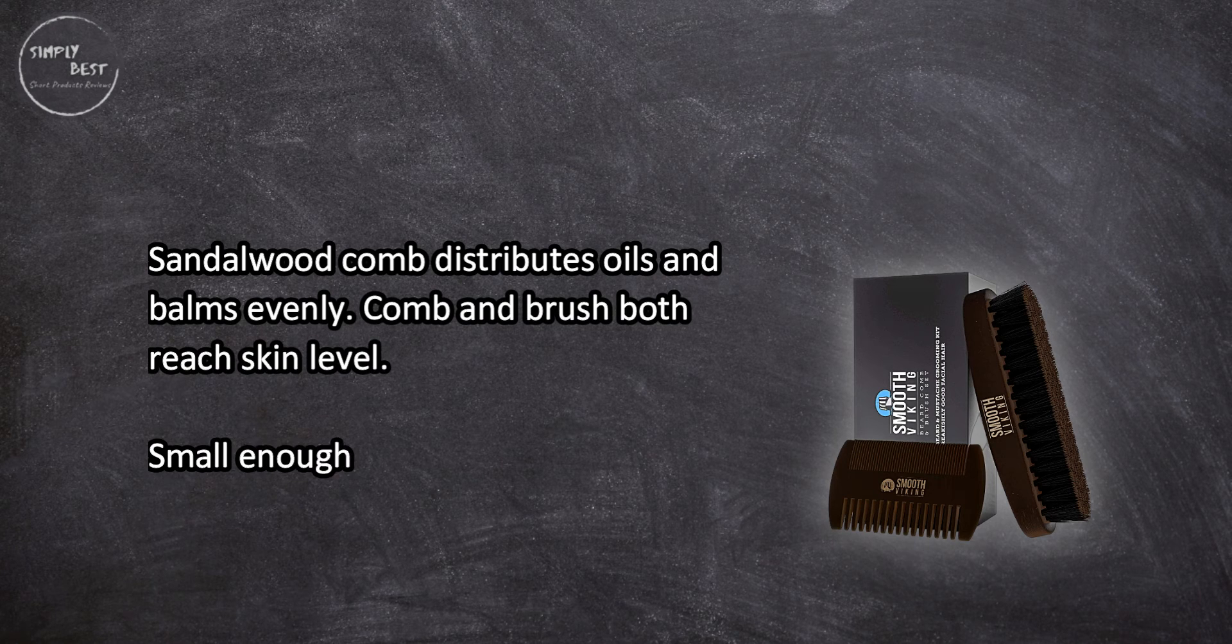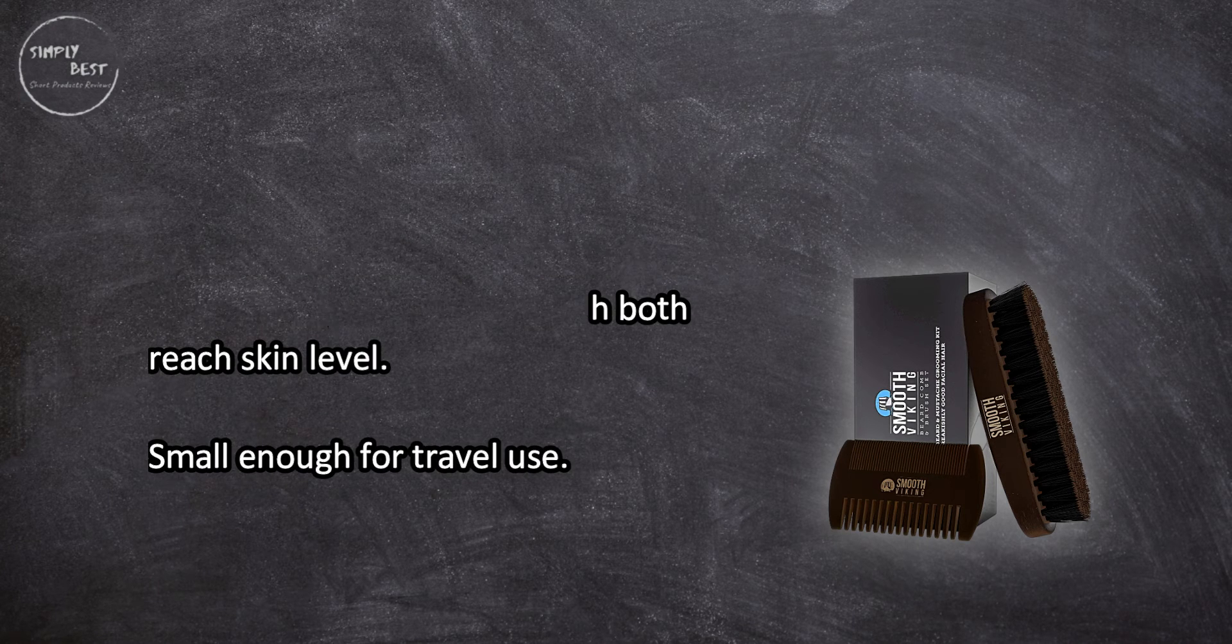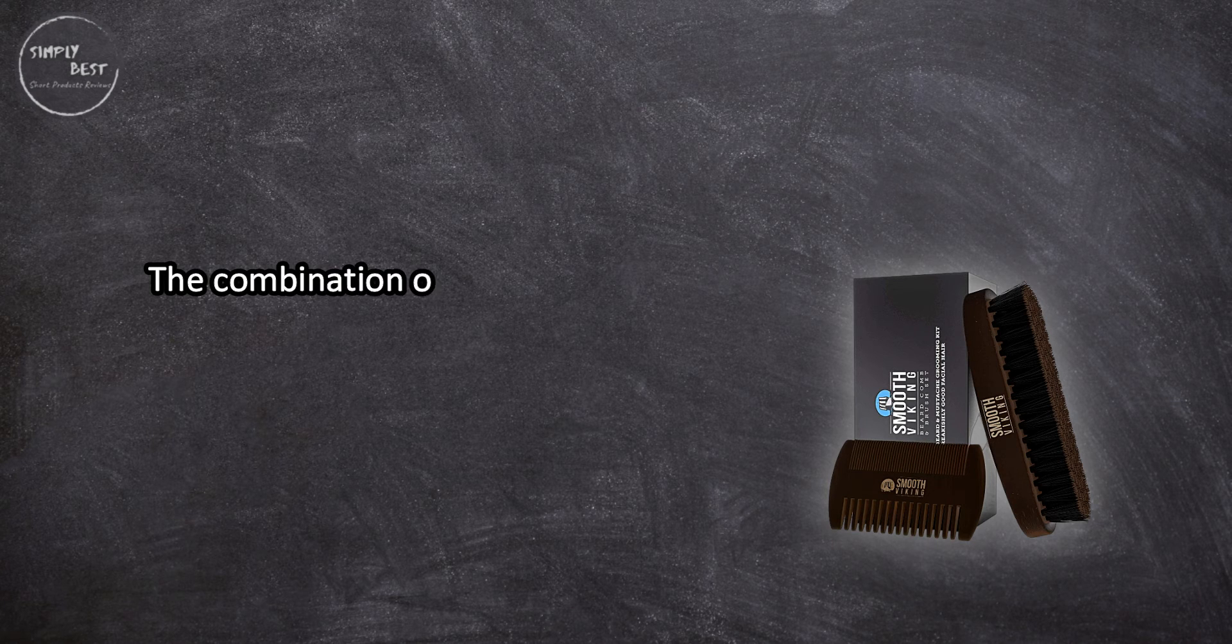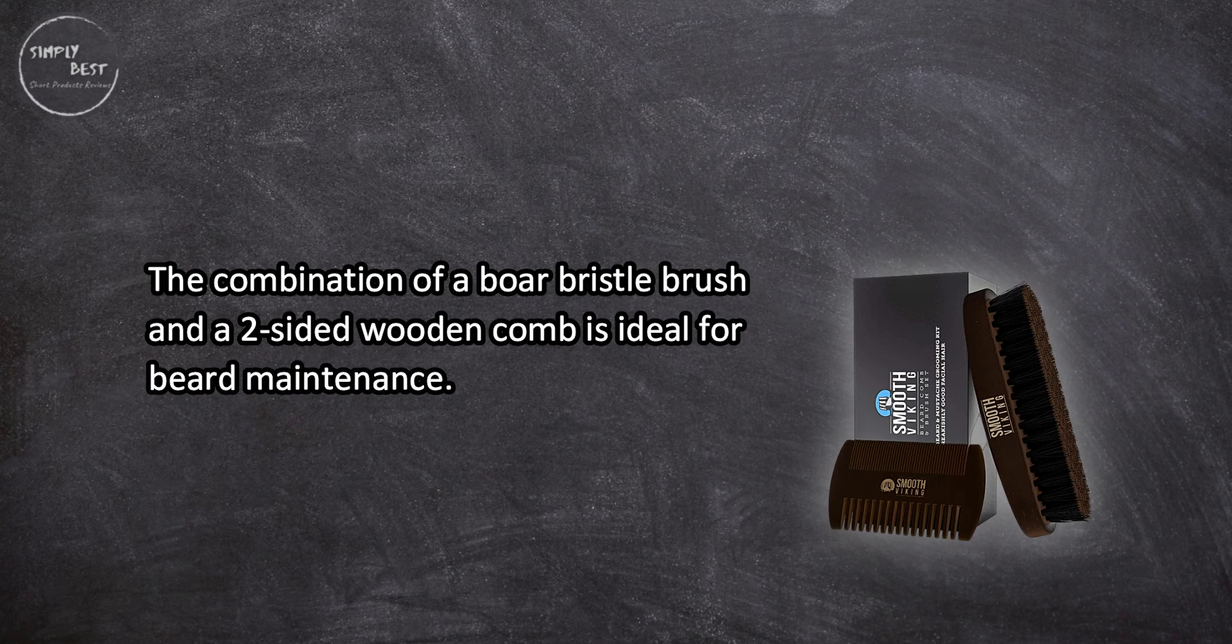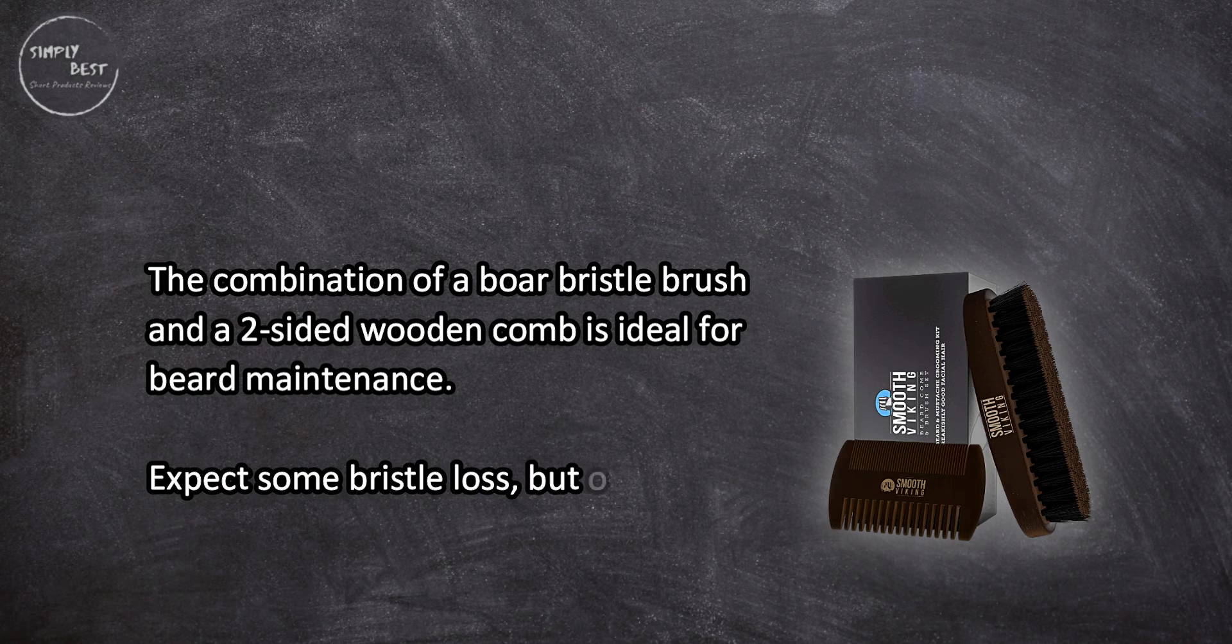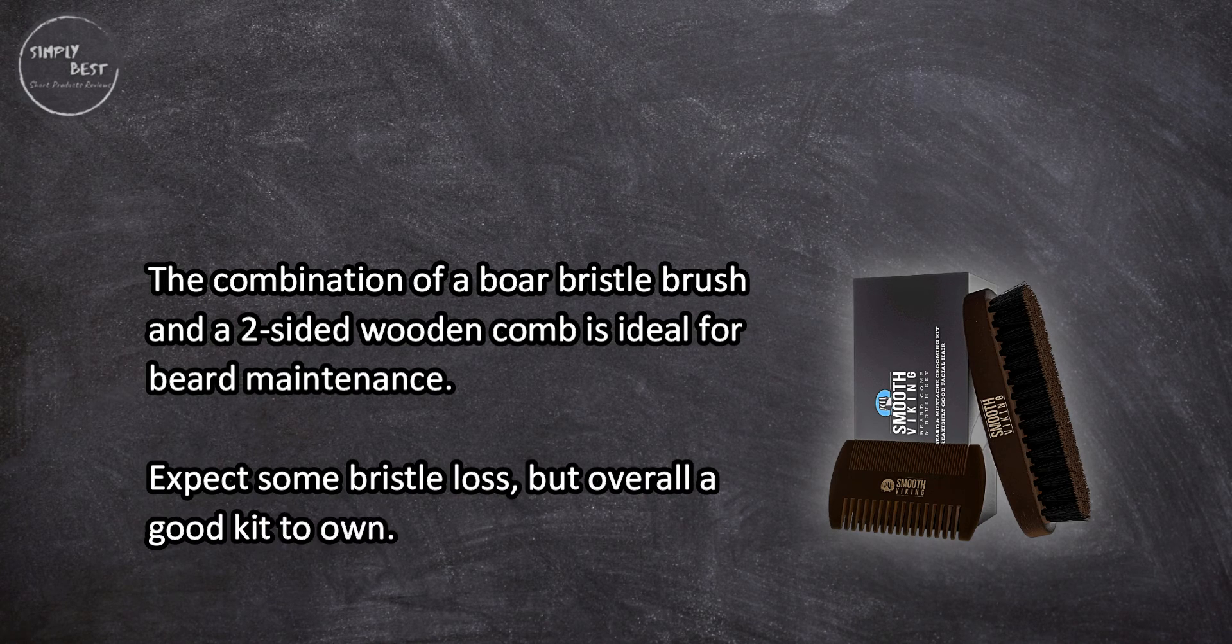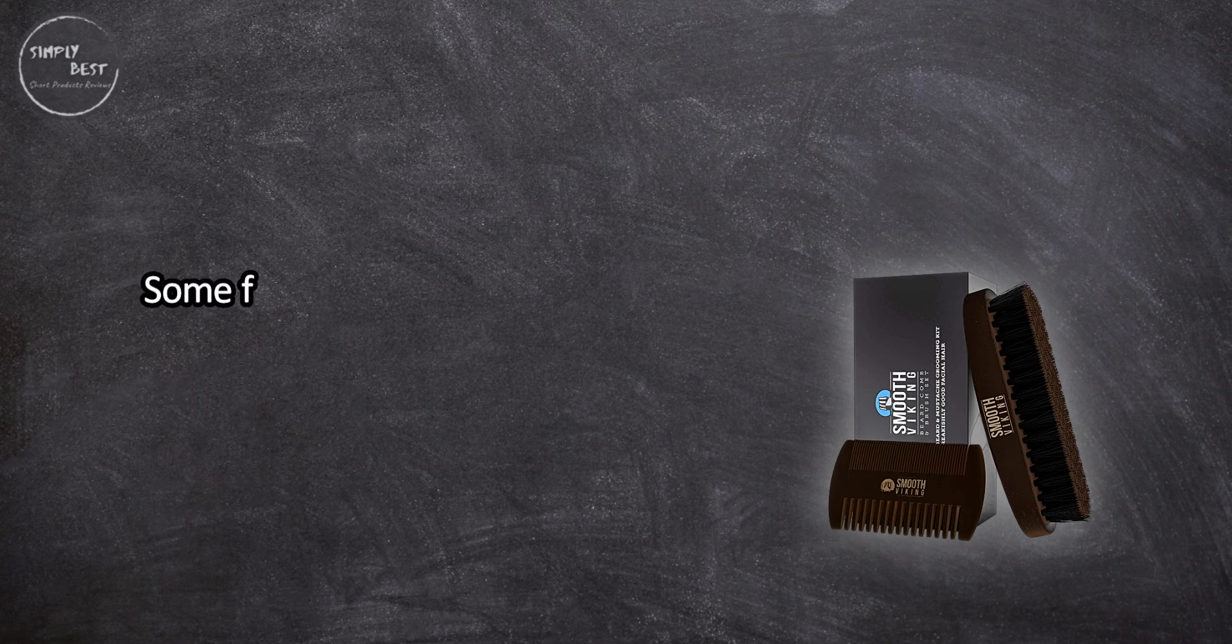Comb and brush both reach skin level, small enough for travel use. The combination of a boar bristle brush and a two-sided wooden comb is ideal for beard maintenance. Expect some bristle loss, but overall a good kit to own.